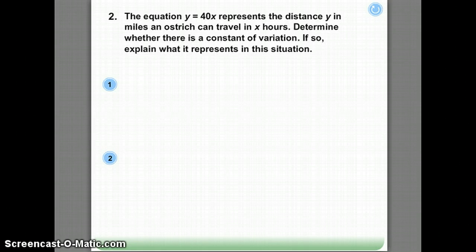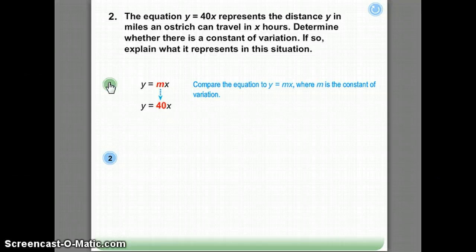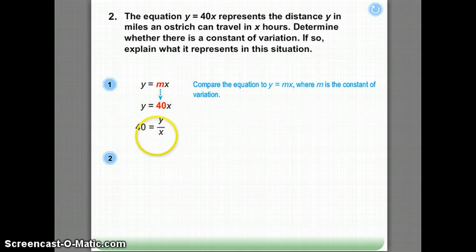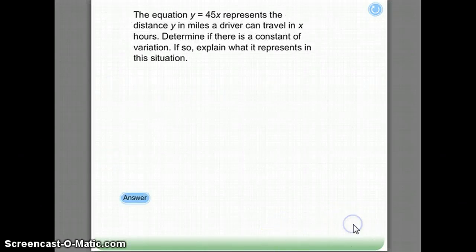Let's try another problem. The equation: we've looked at a graph, now let's go from the equation. Y equals 40X represents the distance Y in miles an ostrich can travel in X hours. Determine whether there is a constant of variation, and if so, explain what that represents in the situation. So, Y equals MX is the equation we're looking for. M is the constant of variation. M is 40. So, 40 equals our constant of variation. So, any point that I put in for Y, the X value, when I divide them, must give me 40 for it to be a direct variation. So, the constant of variation is 40. And that means that the ostrich can travel 40 miles per hour. Now, it's your turn. Go ahead and solve this problem in the work section of your WSQ.